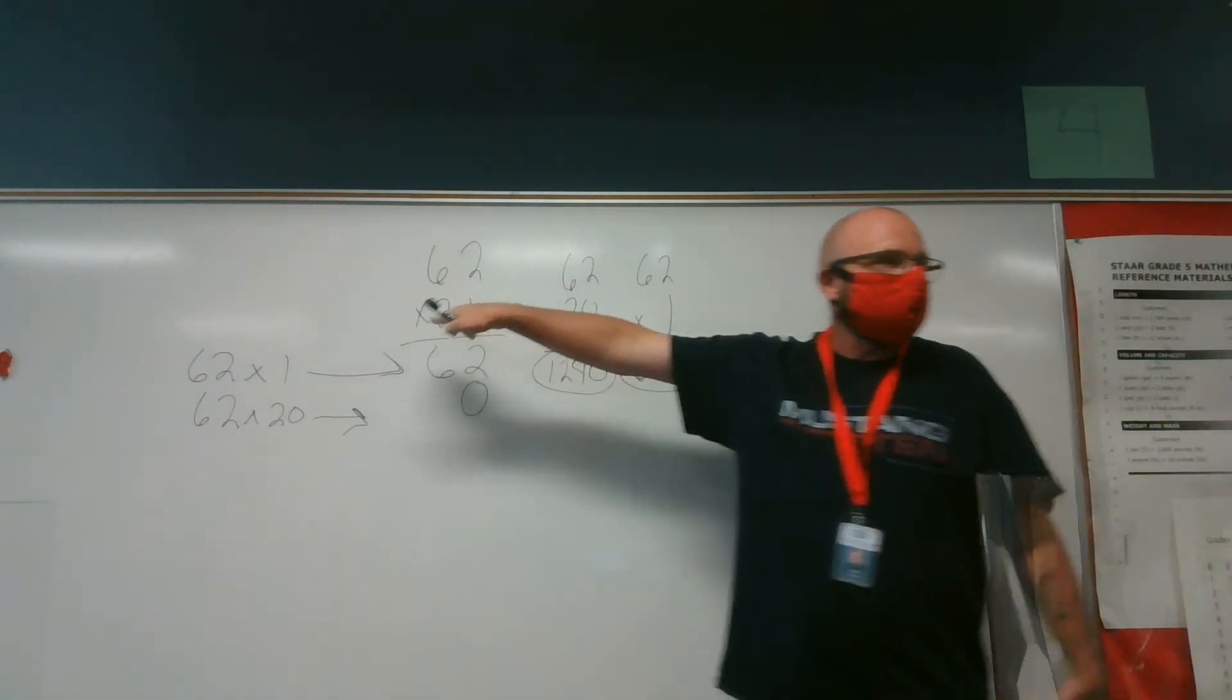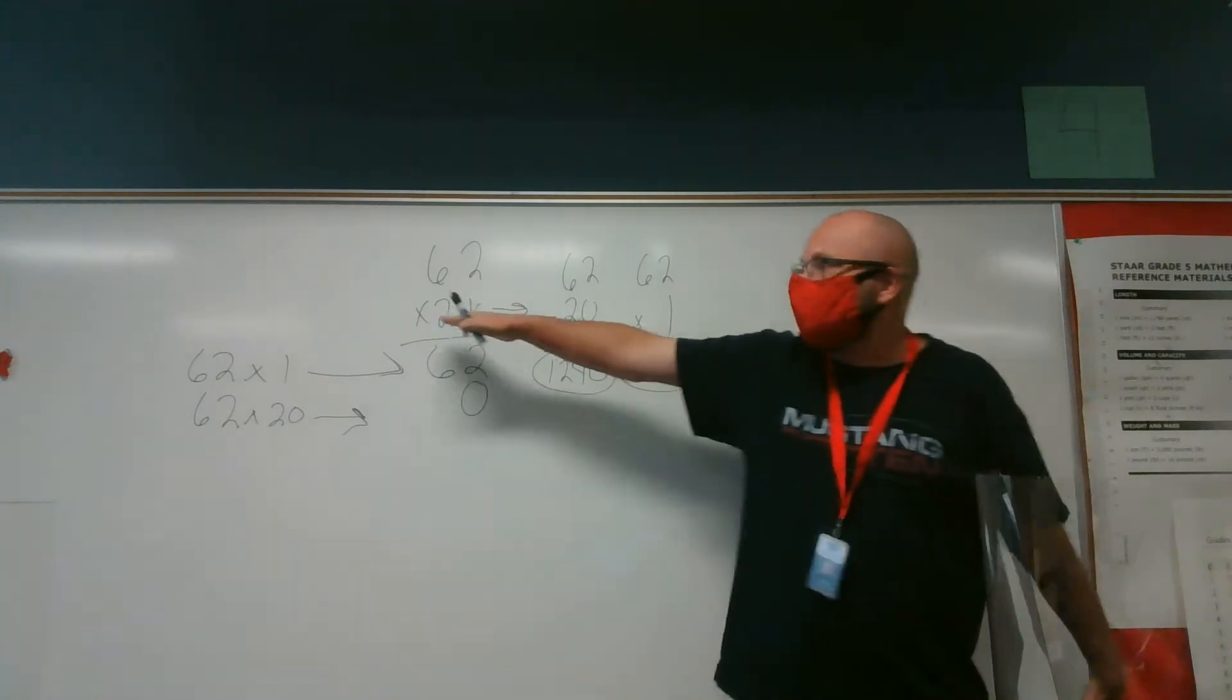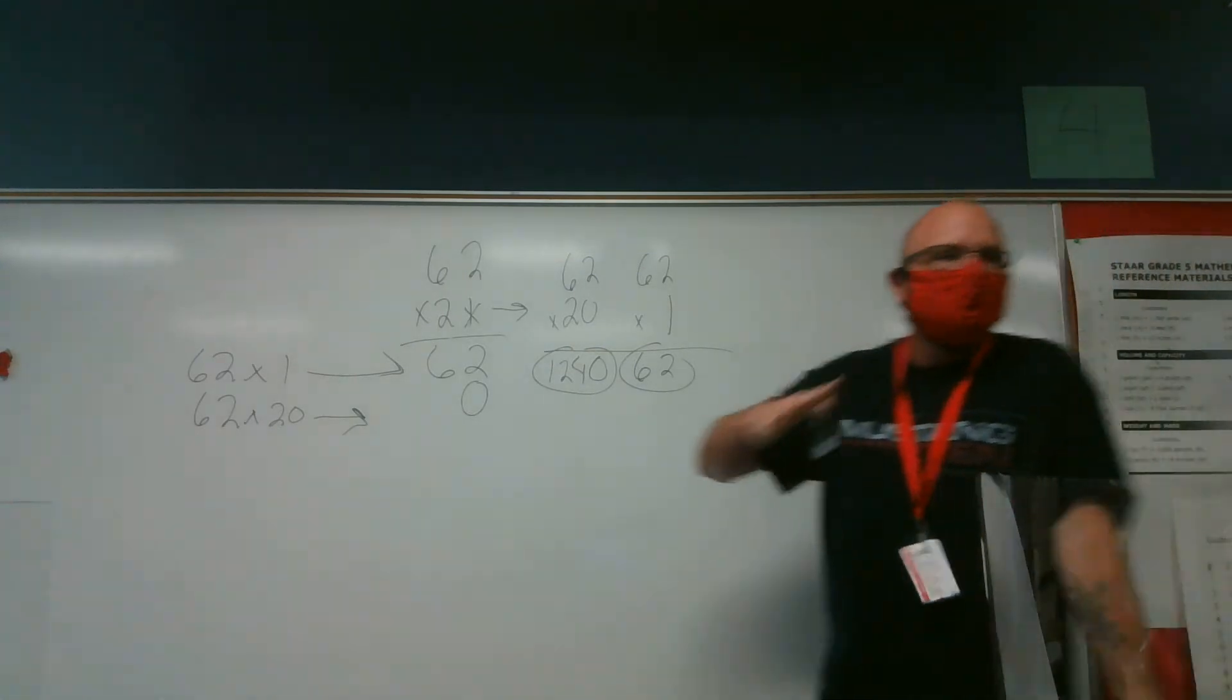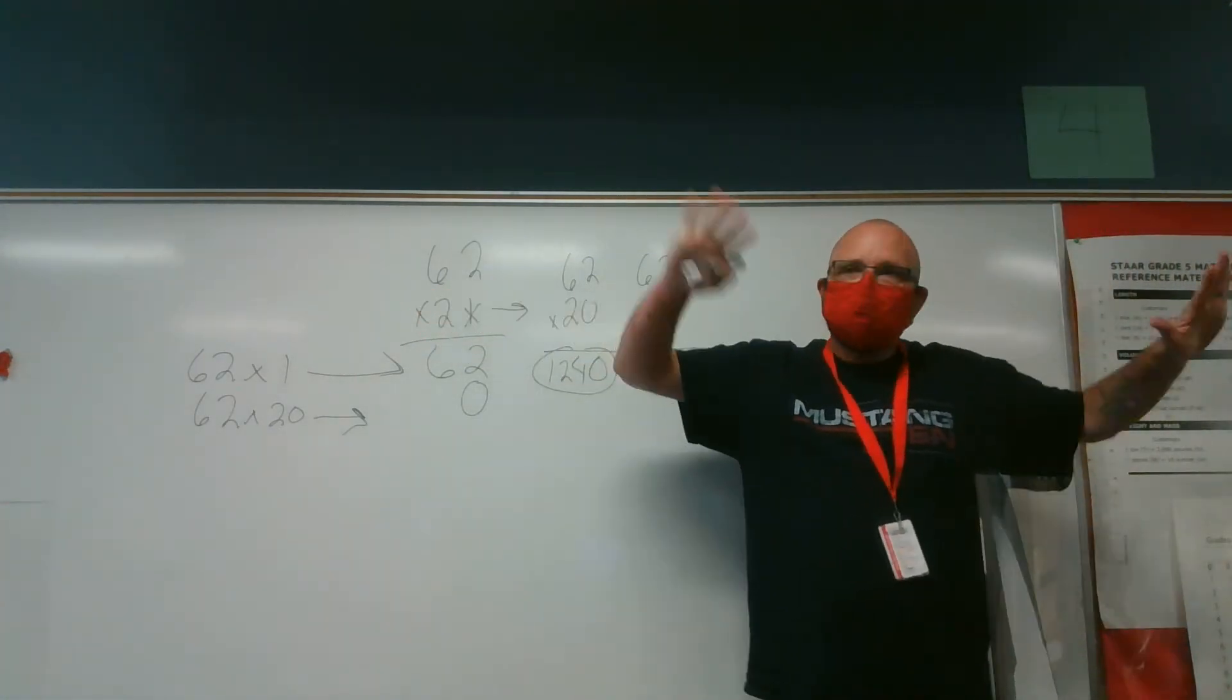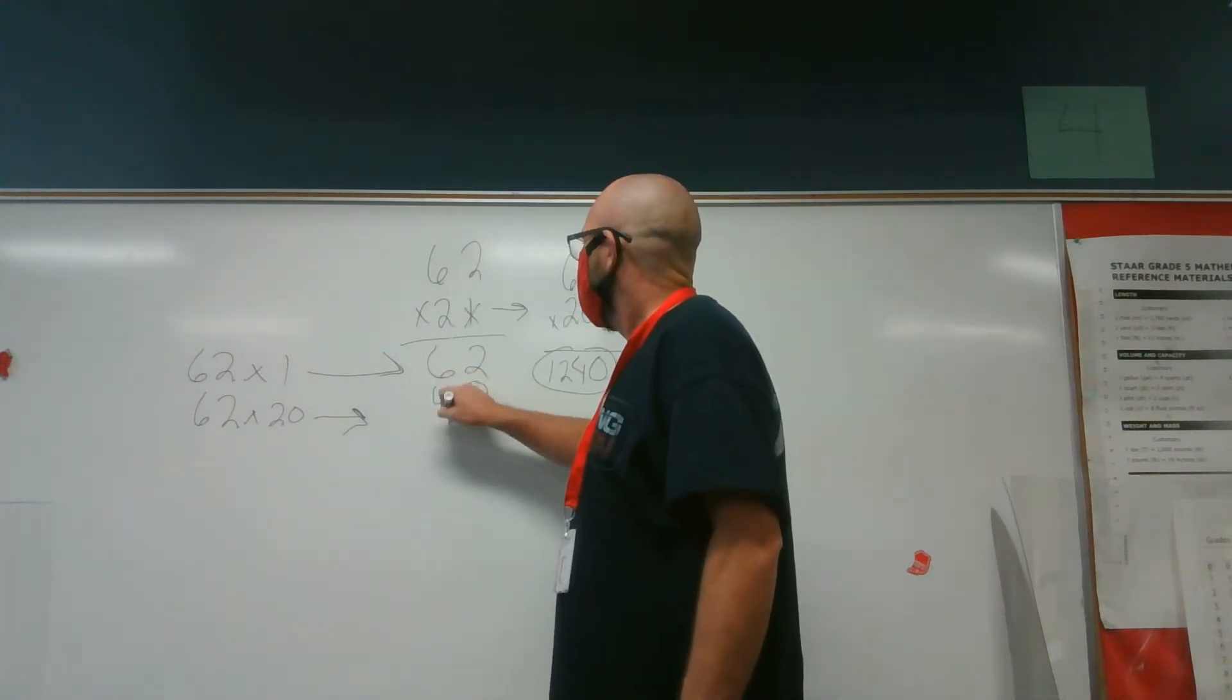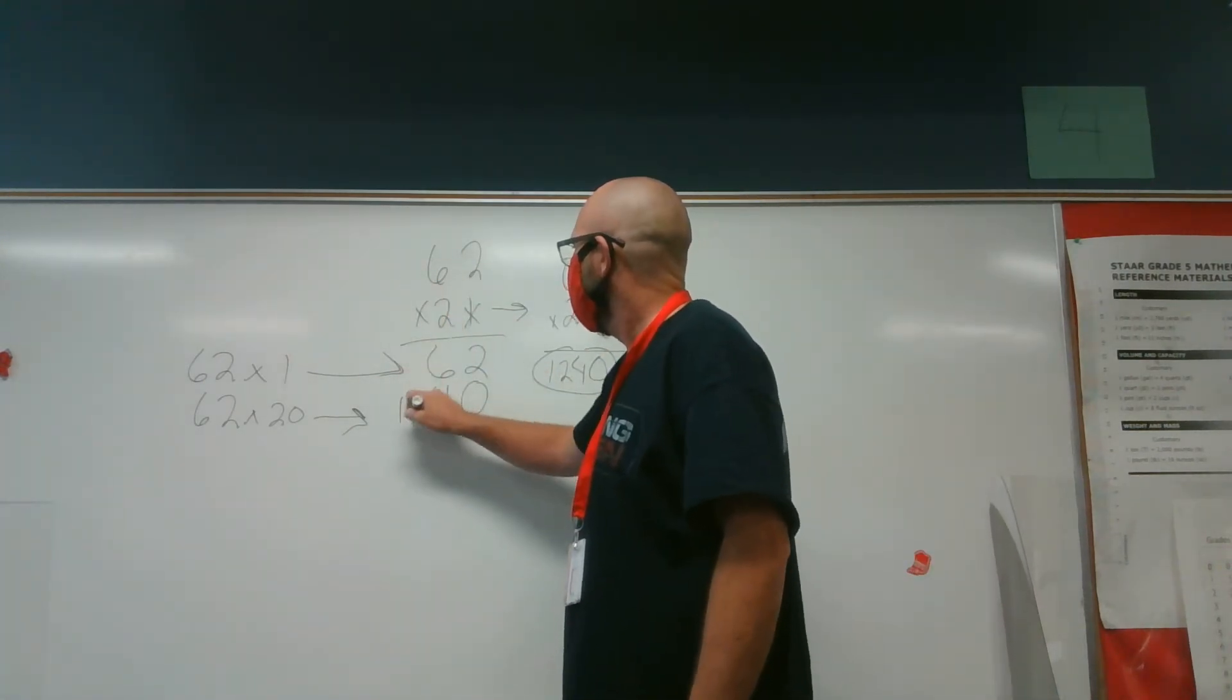Now all I have to do is take this one digit. If I know my multiples of 2, 2, 4, 6, 8, 10, 12. If I know those multiples of 2, then this is easy. Piece of cake. So 2 times 2 is 4. 2 times 6 is 12.